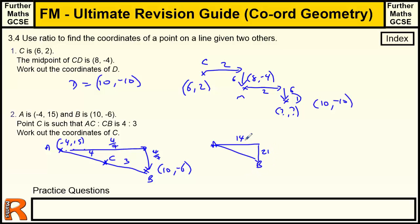So if we split that into sevenths, each seventh is going to be 2 in this direction and 3 in this direction. And we want 4 sevenths. So we want 4 sevenths of 14, which is just going to be 8. And we want 4 sevenths of 21, which is just going to be 12.